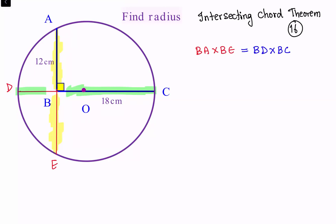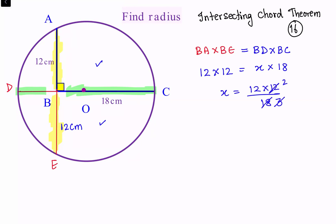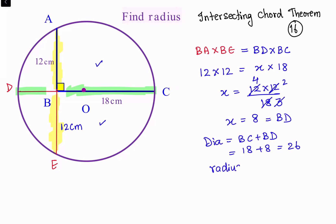By symmetry, this is a semicircle, so BE has to be 12 centimeters. Putting in the values: BA times BE is 12 times 12, and BD (let's call it X) times BC is X times 18. So X equals 12 times 12 divided by 18, which simplifies to 8. So BD equals 8. The diameter is BC plus BD, which is 18 plus 8 equals 26, giving a radius of 13 centimeters. That's method number 2.